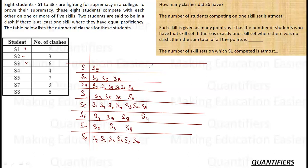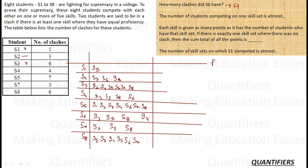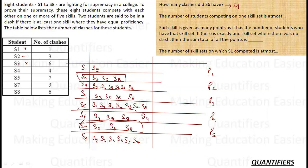Now let's also think about skills. The question asks how many clashes S6 has — it has four. Now let's identify the five skills: P1, P2, P3, P4, and P5. I need to find which skill has the most number of students competing. Looking at the groups: S2, S3, S5, S8 appear together; S7, S3, S5, S8; and S6, S3, S5, S8 — these three students S3, S5, S8 are common across multiple groups.